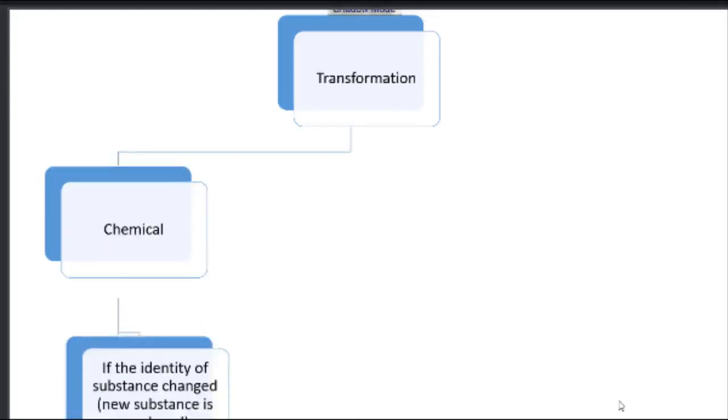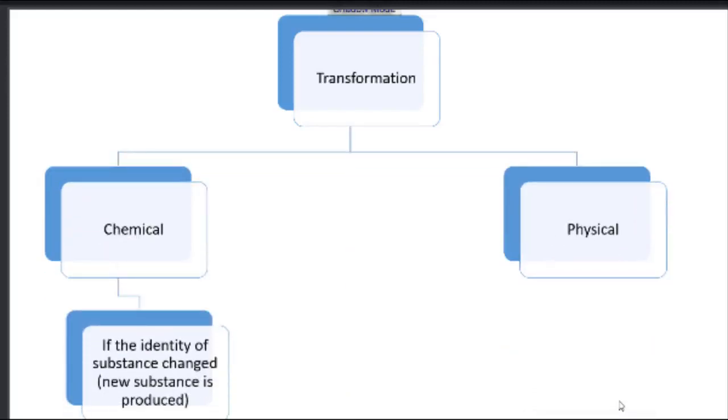As a conclusion, transformation could be chemical if the identity of the substance changed, and could be physical if the identity of the substance didn't change.